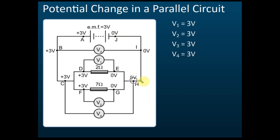I to J — the potential is the same. How about H to I? Still zero, because there's no resistance. E to H — still zero because there's no resistance. G to H — still zero, why? Because there's no resistance. So here the potential is zero, and here the potential is 3 volts.